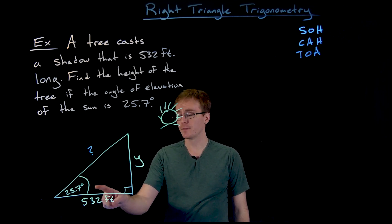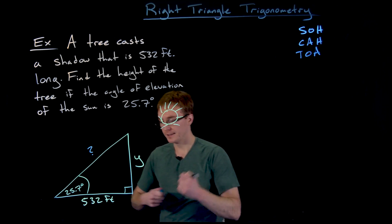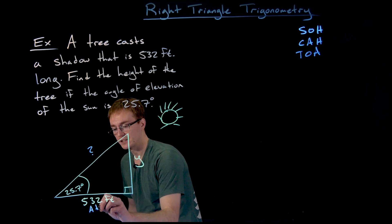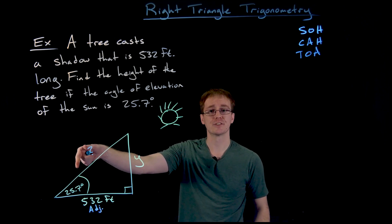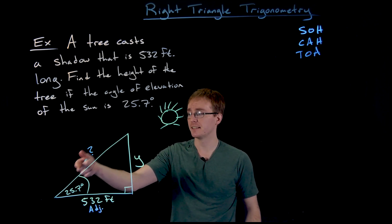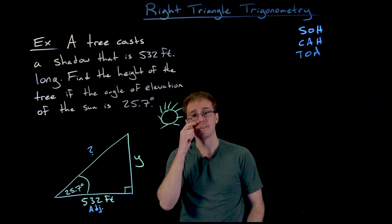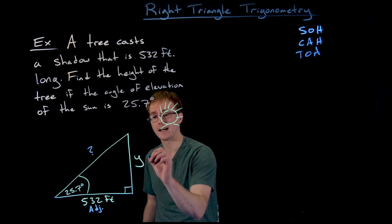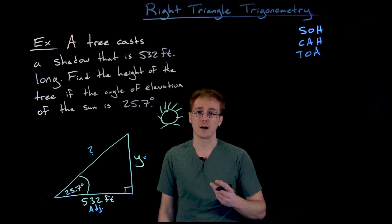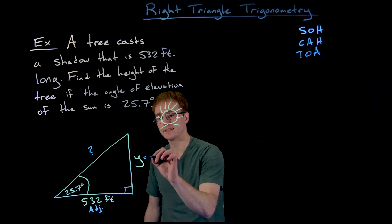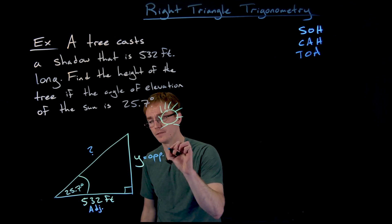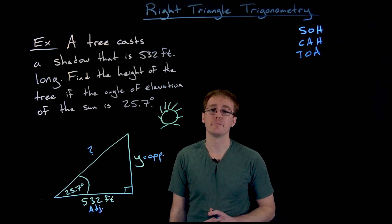With respect to our angle, 532 is the side that is adjacent to our angle. Our other unknown side, the one we're not as interested in, is the hypotenuse. And the side length that we really want to find out that represents the height of our triangle and the height of our tree is the opposite side to our angle of 25.7 degrees.